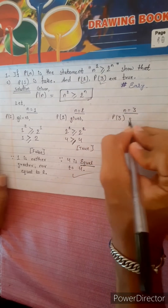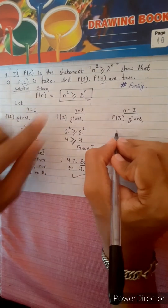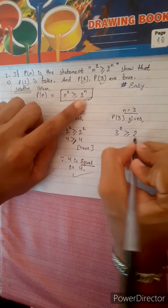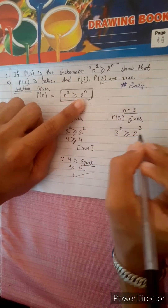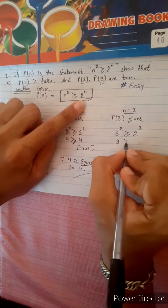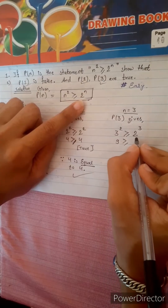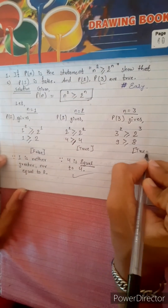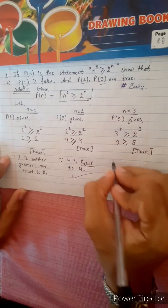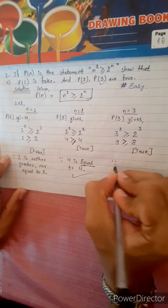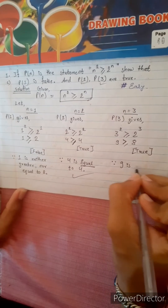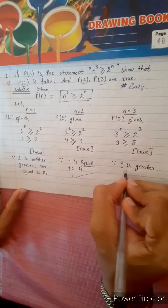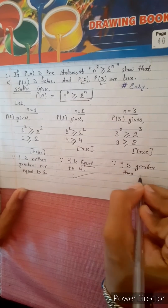P3 gives: 3 power square, that is 9, is greater than or equal to 2 power 3, that is 8. This is true, because 9 is greater than or equal to 8 — in fact, 9 is strictly greater than 8.